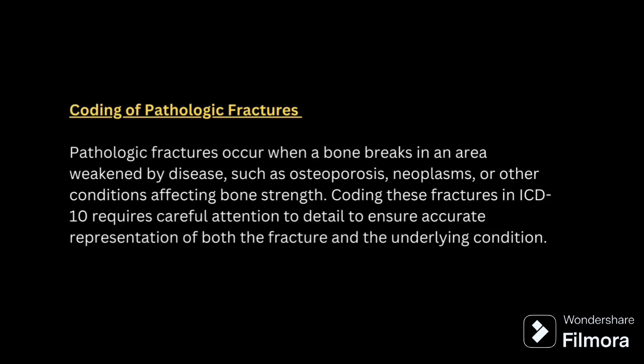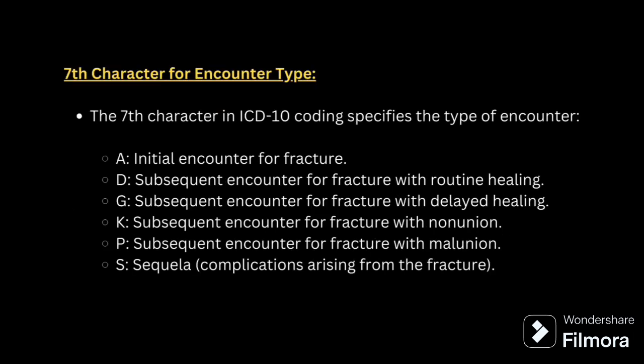The next guideline is coding of pathological fracture. Pathological fractures are of two types: traumatic and pathological. Traumatic means happening out of accidents, and pathological is happening because of a bone-related disease condition. Whenever you are coding for pathological fracture, make sure you are giving seven characters — the seventh character is very important. It includes: A for initial encounter, D for subsequent encounter with routine healing, G for subsequent encounter with delayed healing, K for subsequent encounter with non-union, T for subsequent encounter with malunion, and S for sequelae condition.